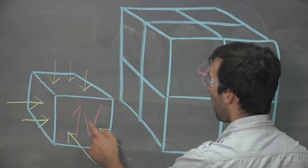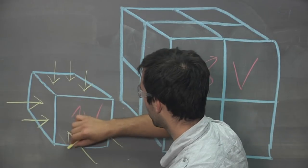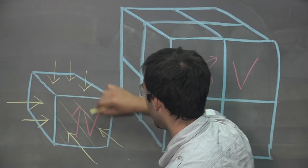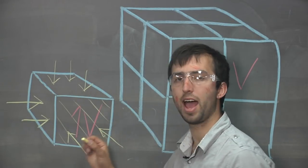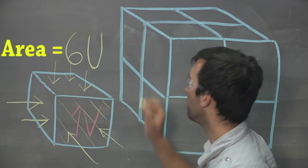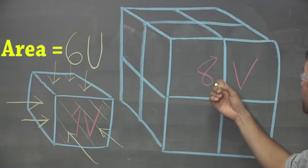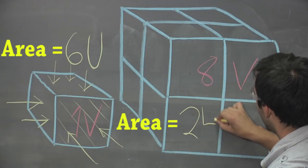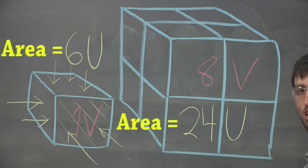Now this block, if we say that each side is one unit, this block has six units available to it. Now let's think about this cube. This one will have, each side has four, but there are six sides, so this one has a total of twenty-four units of area.